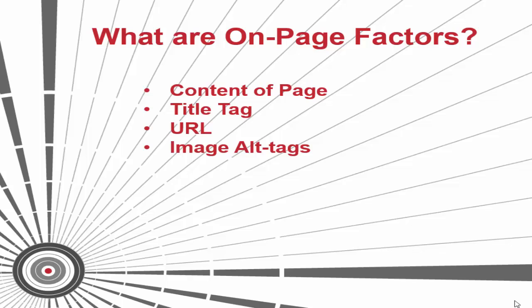A bad example of URL structure is imdb.com/title/TT0468569. Unlike the first example, this URL does not reflect the information hierarchy of the website. Search engines can see the page is on the IMDB domain but cannot determine what it's about. The reference to TT0468569 does not infer anything a user is likely to search for. URL structure is very important because it helps search engines understand relative importance and adds a relevancy metric. It also helps from an anchor text perspective, as people are more likely to link with relevant words if keywords are in the URL.